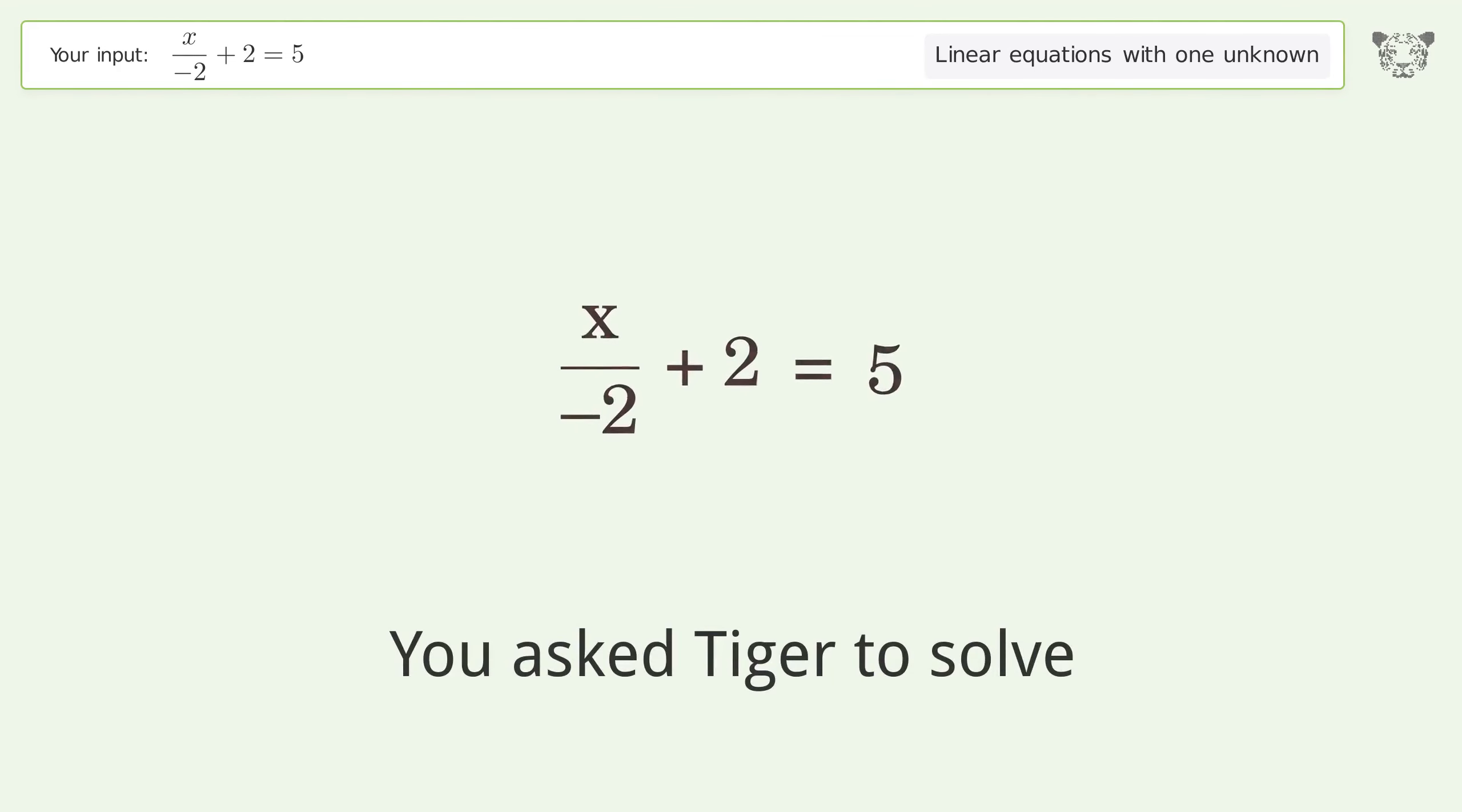You asked Tiger to solve this. This deals with linear equations with one unknown. The final result is x equals negative 6.